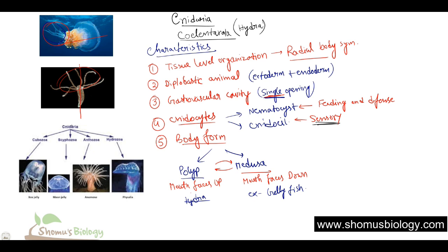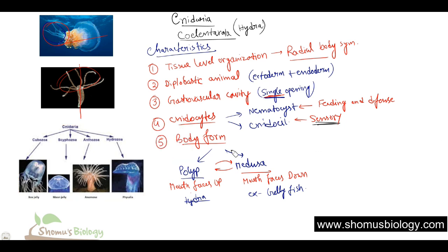Cnidaria can be divided into different classes: Cubozoa, Scyphozoa, Anthozoa, and Hydrozoa. Different examples are provided — Anthozoa includes sea anemone, Scyphozoa includes moon jelly, Cubozoa is the typical box jelly, and Hydrozoa is also represented. All of these are part of the Cnidaria group.